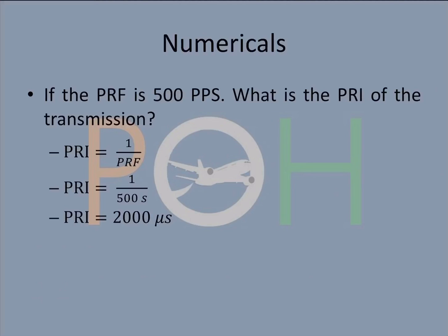Let's look at some numericals here. If the PRF is 500 pulses per second, what is the PRI of the transmission? So PRF is 500, and if you just put it in the formula you'll get one by 500, which is 2000 microseconds.